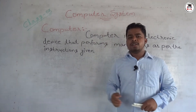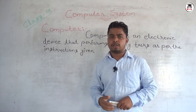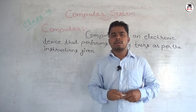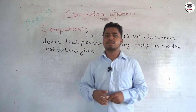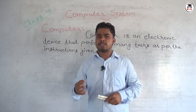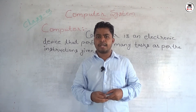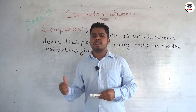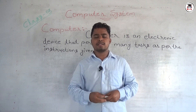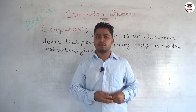Computer is an electronic device. Why is it an electronic device? Because it runs with the help of electricity. So, it is an electronic device that performs many tasks as per the instructions given. It works based on the instructions given to it. The user — the person who is using the computer — gives instructions like open MS Word, open Paint, and so on. Based on those instructions, the computer follows and works.